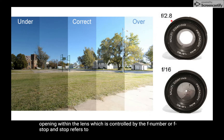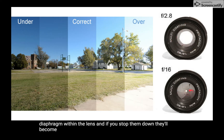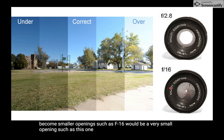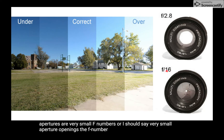Stop refers to stopping down these metal blades — the diaphragm — within the lens. If you stop them down, they become smaller openings, such as F16, which would be a very small opening. F11, F22 — those would all be very small aperture openings. The larger the F number, the smaller the opening.